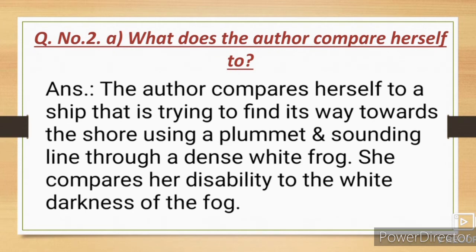Question number two (a): What does the author compare herself to? The author compares herself to a ship that is trying to find its way towards the shore using a plummet and sounding line through a dense white fog. She compares her disability to the white darkness of the fog.